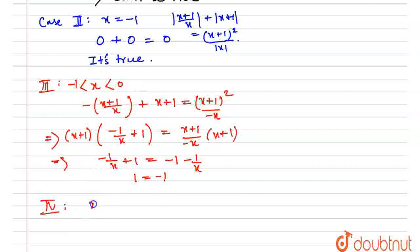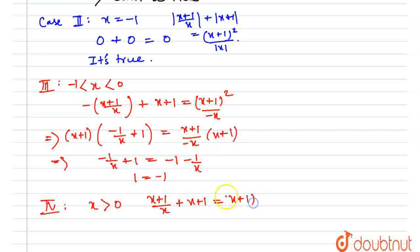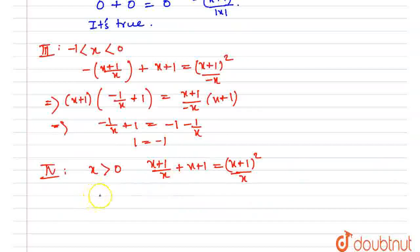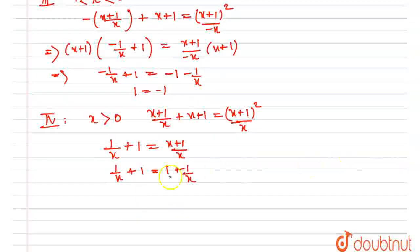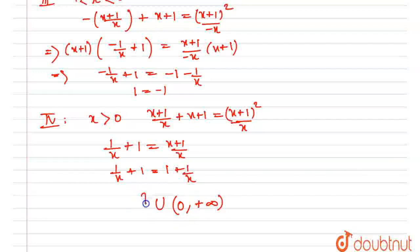Case 4: x > 0. The equation becomes (x+1)/x + (x+1) = (x+1)² / x. After taking out x+1 and cancelling it (valid since x+1 > 0 for x > 0), this becomes 1/x + 1 = (x+1)/x, which simplifies to 1/x + 1 = 1 + 1/x, which is true for every value of x > 0. Therefore the final solution set is (0, +∞) ∪ {-1}.